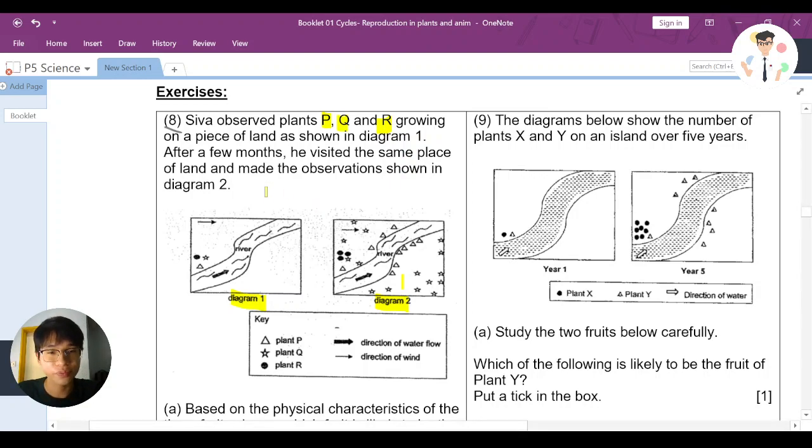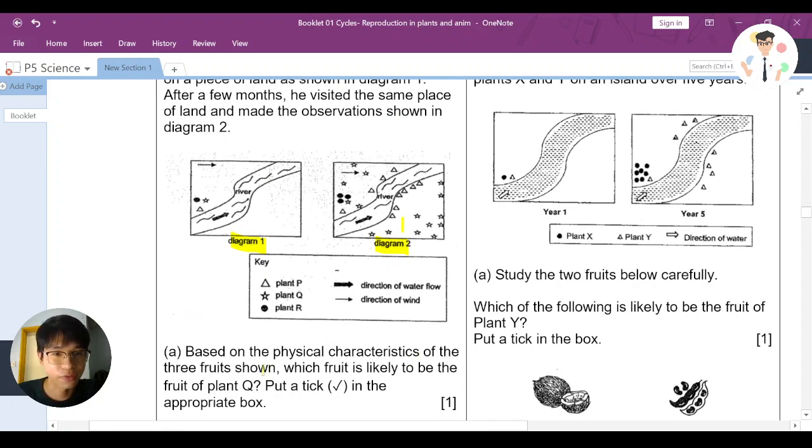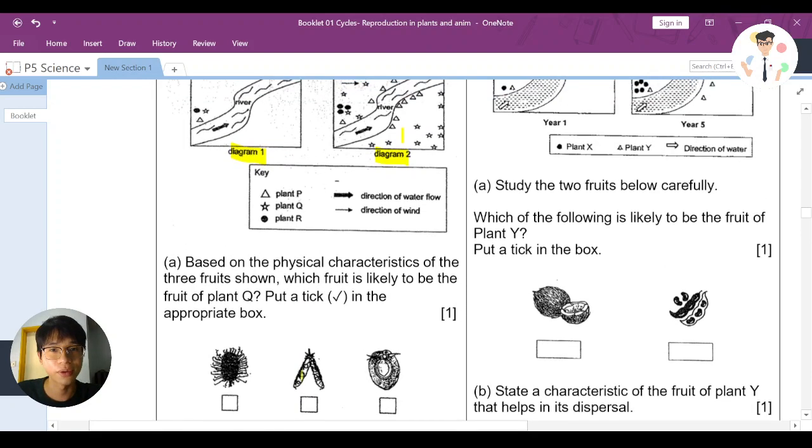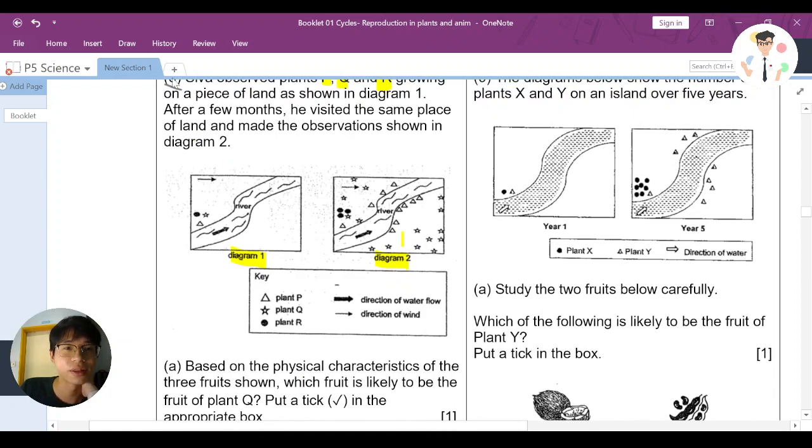So let's try to look at here, part A. Based on the physical characteristics of these fruits shown, which fruit is likely to be the fruit of plant Q? Put a tick. Now let's go back here first and observe. We can see that there's three different plants. The first one is a triangle, plant P. Plant P, first few months it's like this, but later on it seems like going in this direction. So with that observation, can you tell me plant P is dispersed through what methods? As you can see, it's along the river. It's following the direction of the waterfall. So that's water dispersal. Kind of obvious. Now the next one.